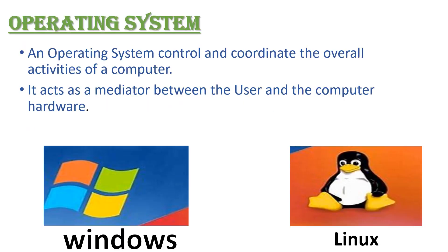Operating system is a part of system software. An operating system controls and coordinates the overall activities of a computer. It acts as a mediator between the user and the computer system. It is a software that helps you operate the computer system through its various functions, and manages the different parts of the computer system.